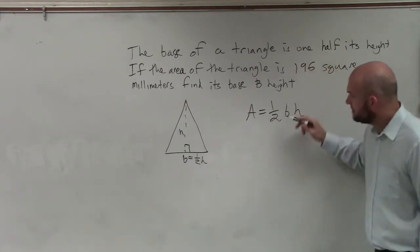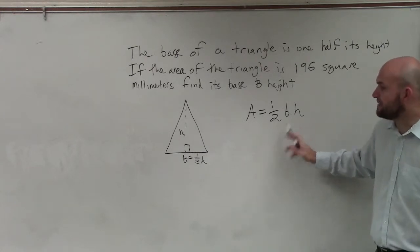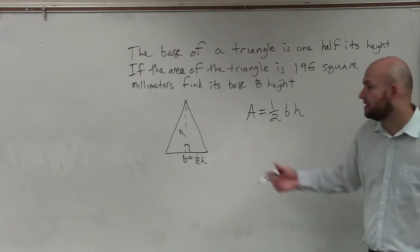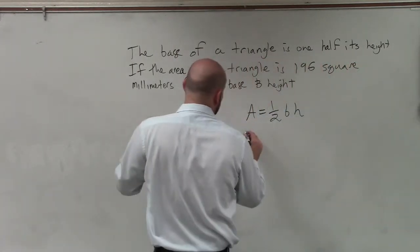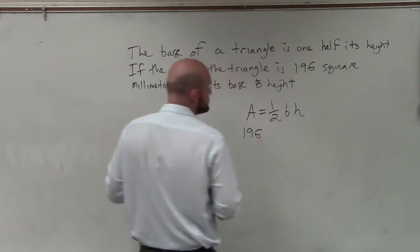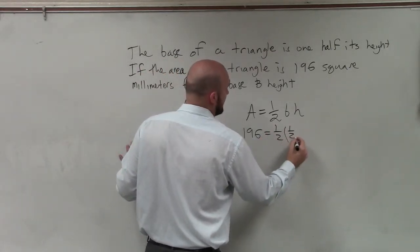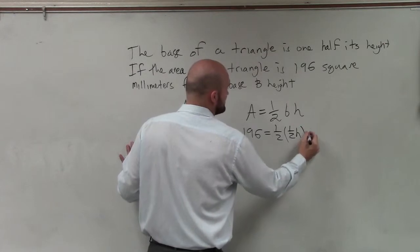So to do that, I can rewrite, it would be okay if I rewrote the base as 1 half h because it's 1 half the height. And I'm going to write in 196 square millimeters for the area, 1 half times 1 half h times h.